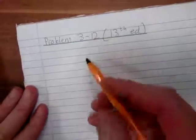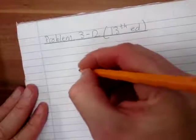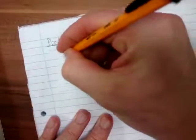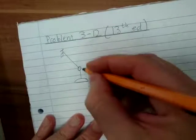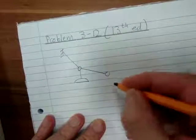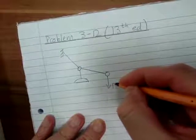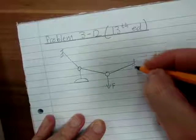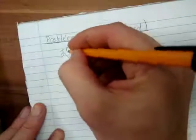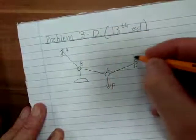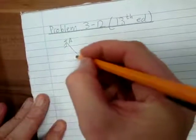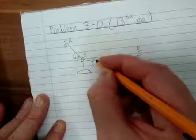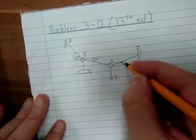Let me draw it over here — problem 312. We've got B with a cable coming up, the lamp hanging down, a cable going down, a force F, and another cable going up. That's A, B, C, D. We've got 60 degrees here, 30 degrees there, and 30 degrees there.